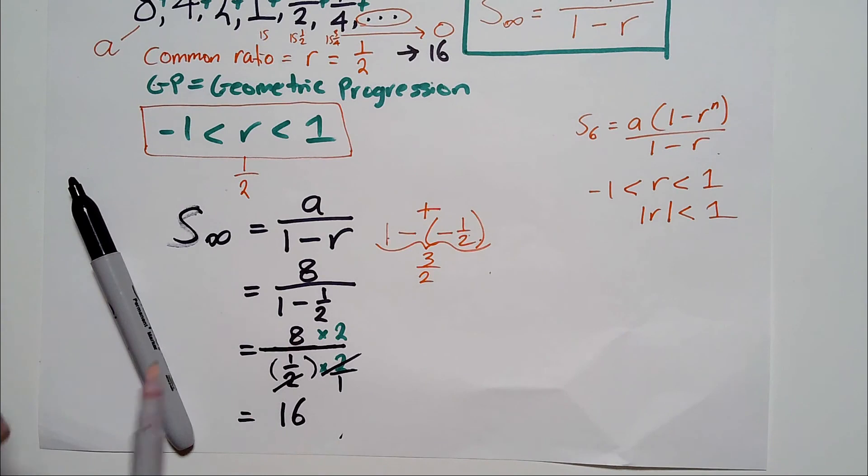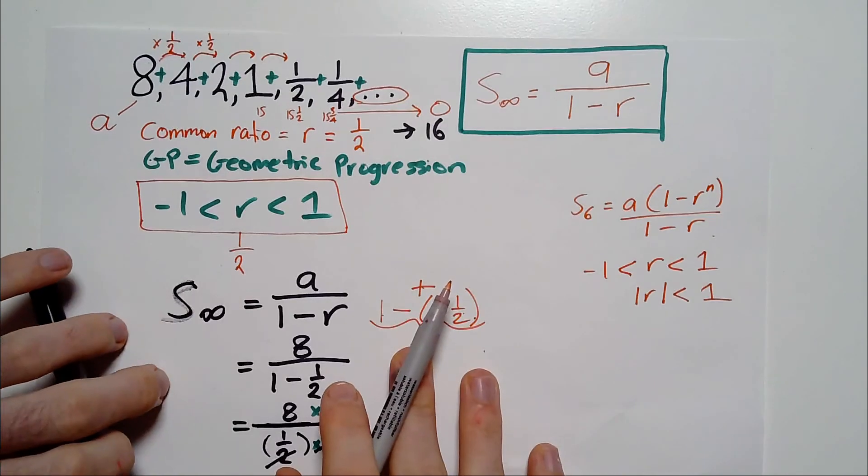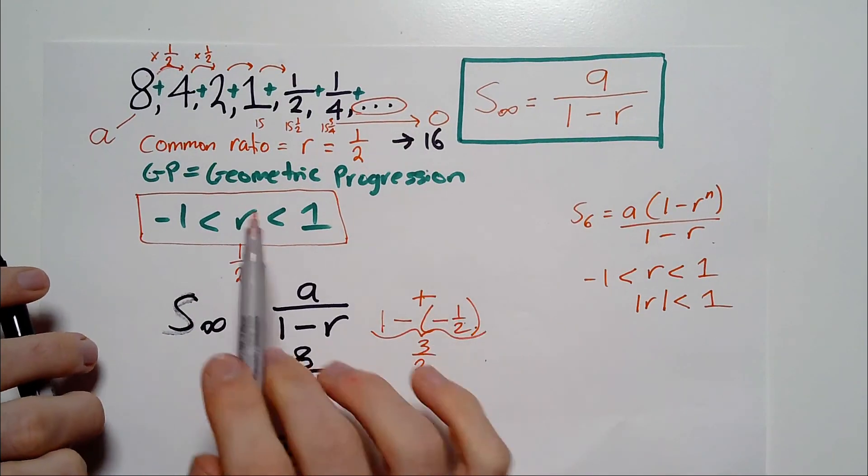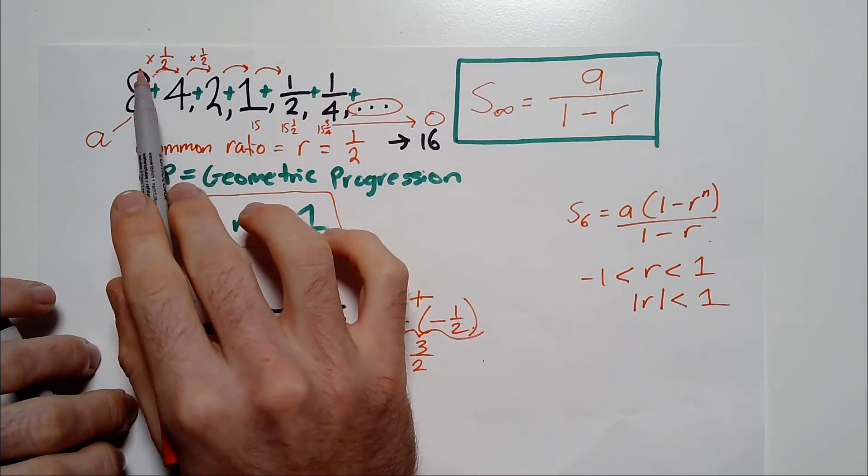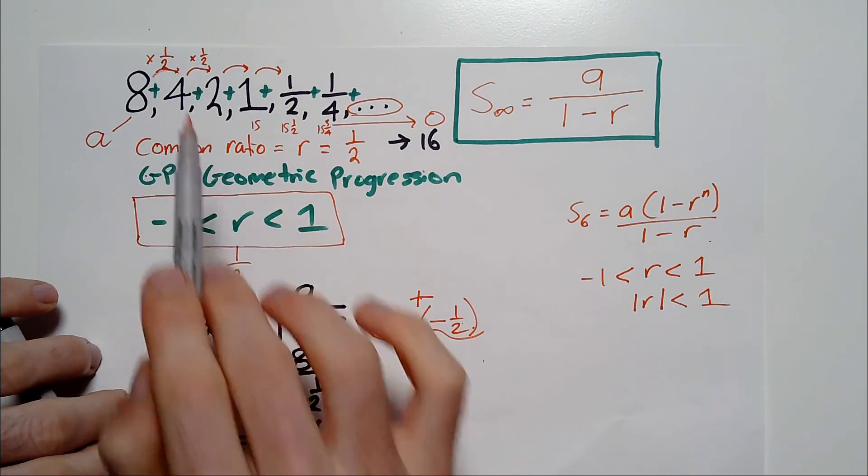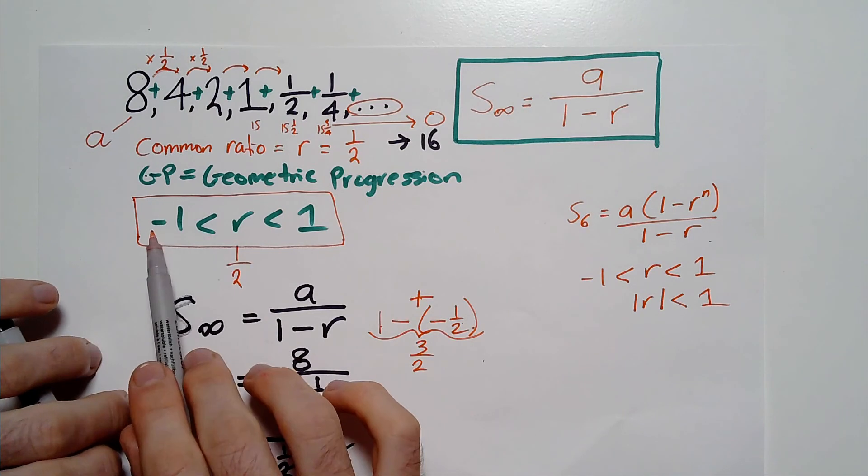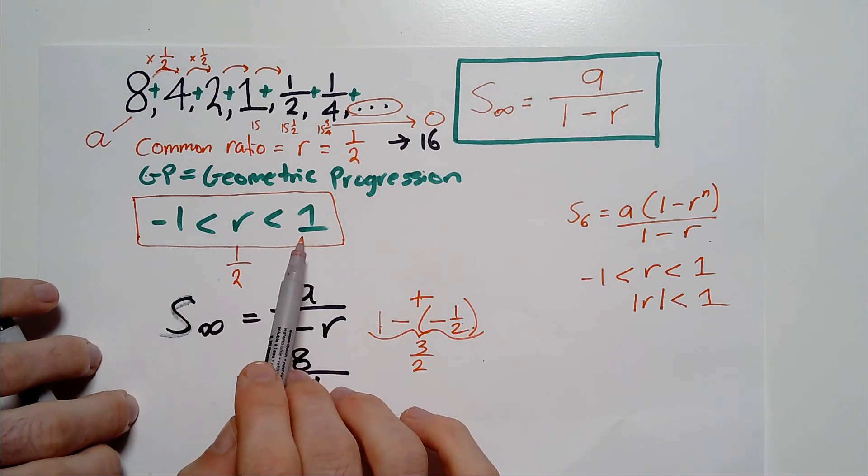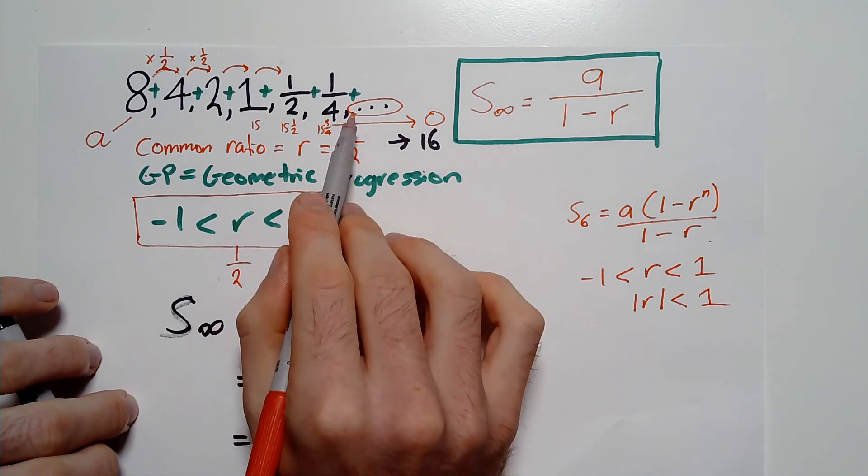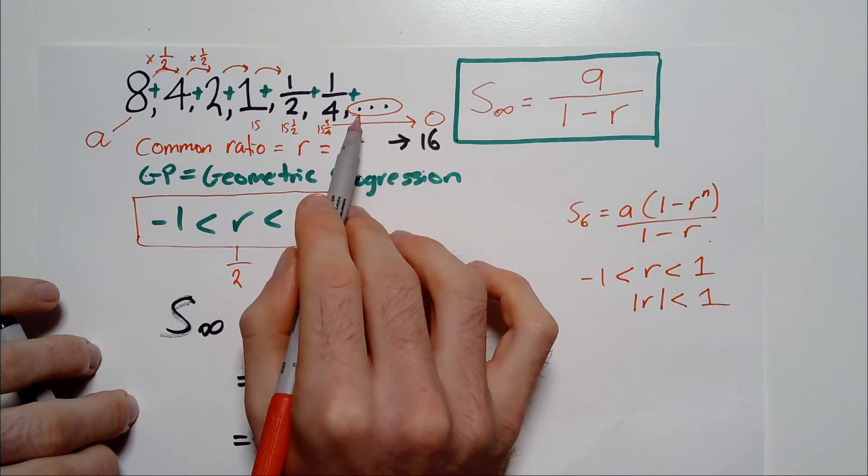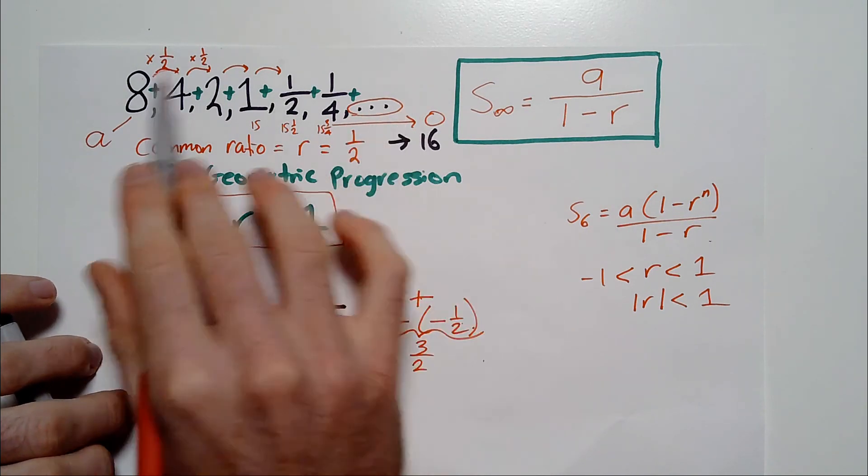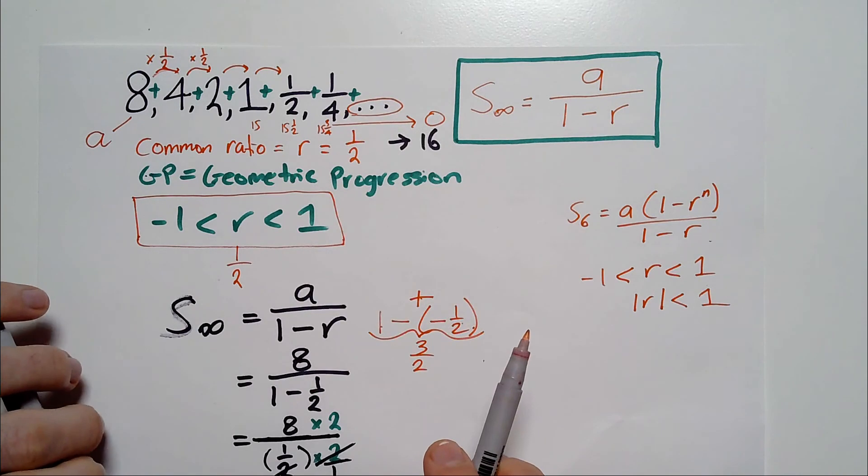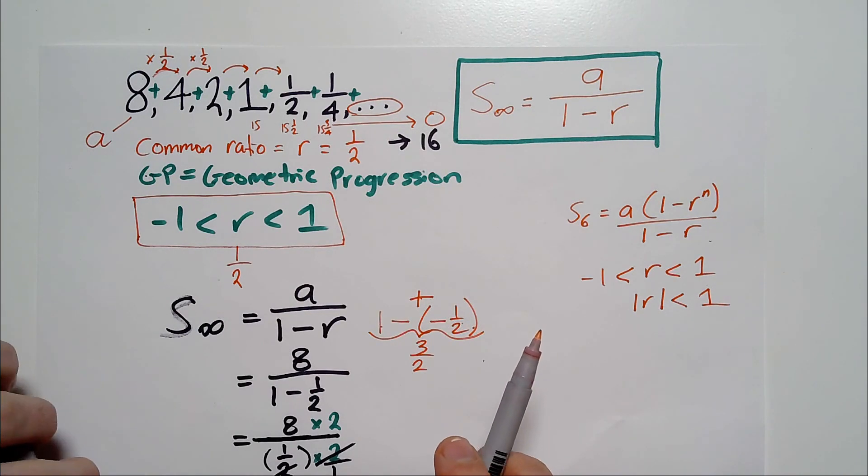I hope that helps, guys. Just to recap a few things, make sure that you only apply this where it is a GP, not an AP. So a geometric progression where there is this common multiplier. You also want that common ratio or multiplier to be between negative 1 and 1. And you also need to make sure that the series is, in fact, going forever. So look for the words infinite sum or look for a dot, dot, dot when the question presents the series. Alright, if you've got any questions, please comment below. Otherwise, I hope you enjoyed and I'll see you in the next video.